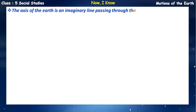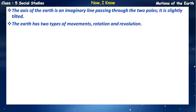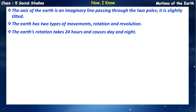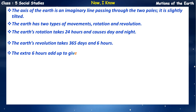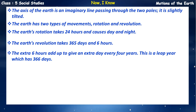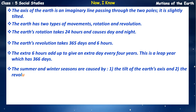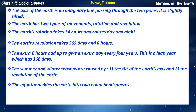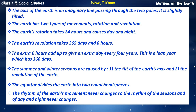Now I know: the axis of the Earth is an imaginary line passing through the two poles, and it is slightly tilted. The Earth has two types of movements – rotation and revolution. The Earth's rotation takes 24 hours and causes day and night. The Earth's revolution takes 365 days and 6 hours; the extra 6 hours add up to give an extra day every 4 years, making a leap year with 366 days. The summer and winter seasons are caused by the tilt of the Earth's axis and the revolution of the Earth. The equator divides the Earth into two equal hemispheres, and the rhythm of the Earth's movement never changes.